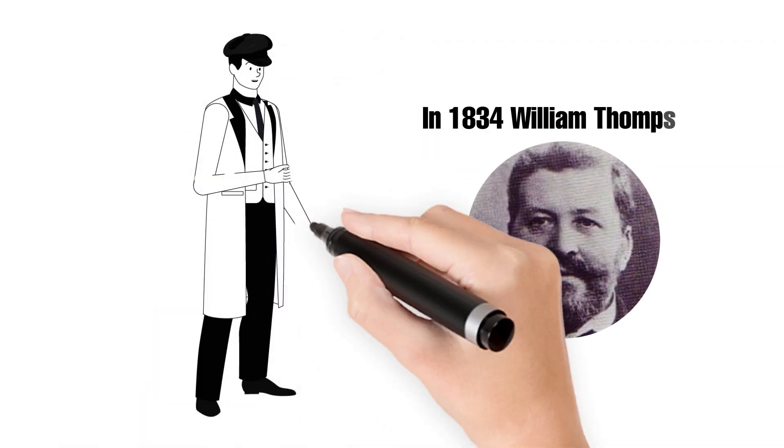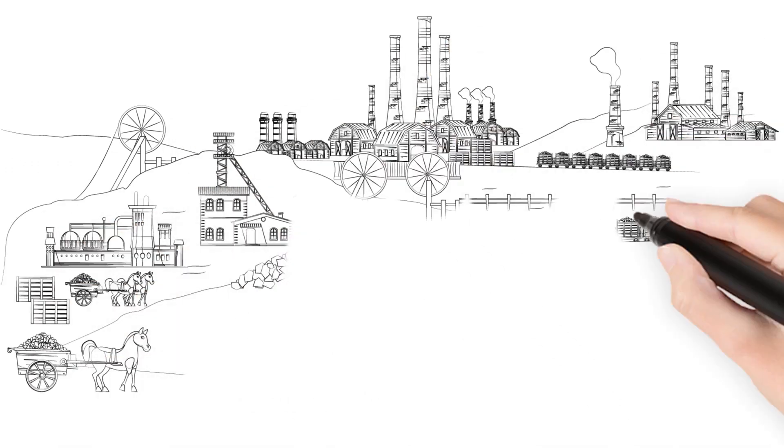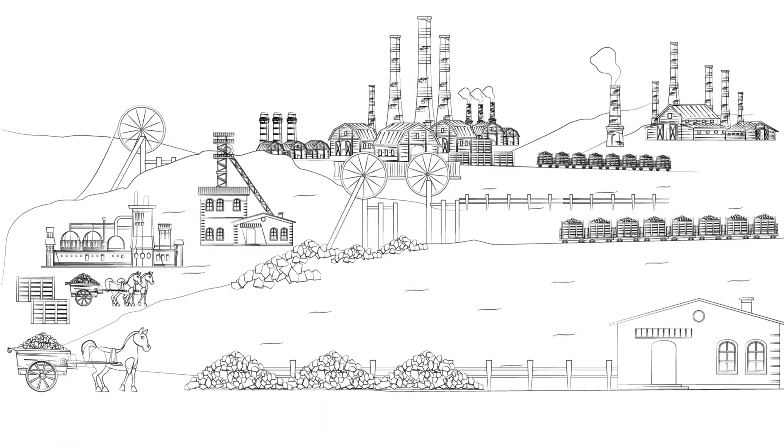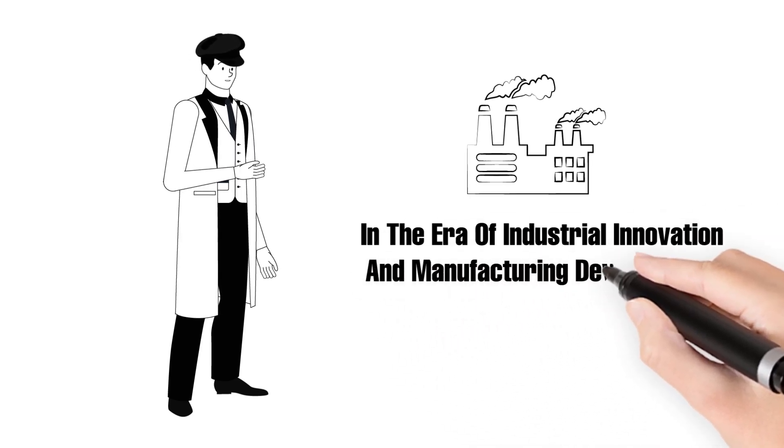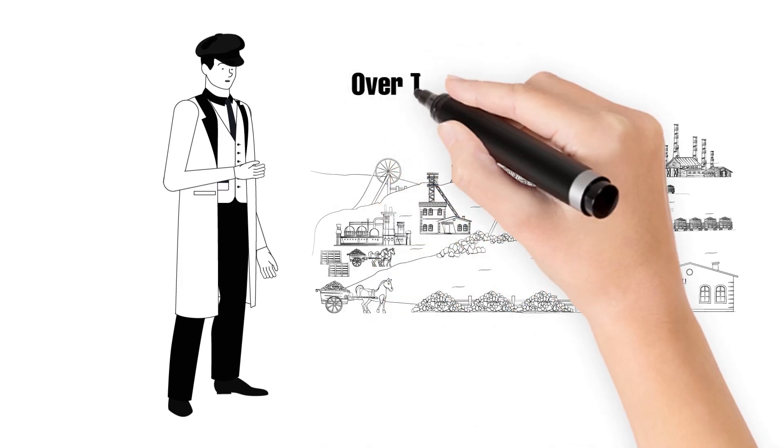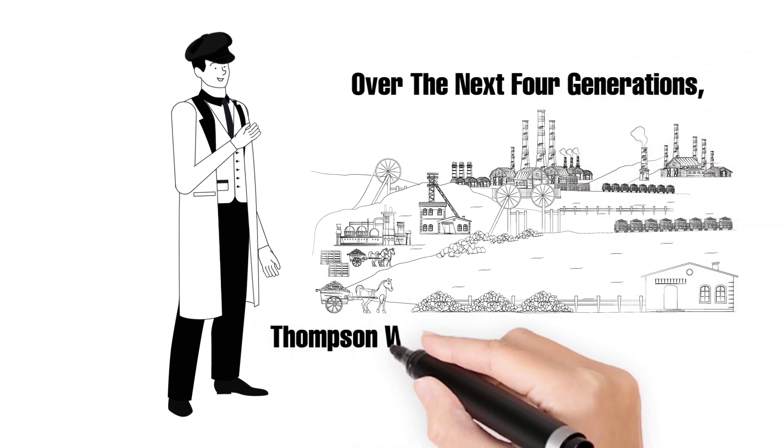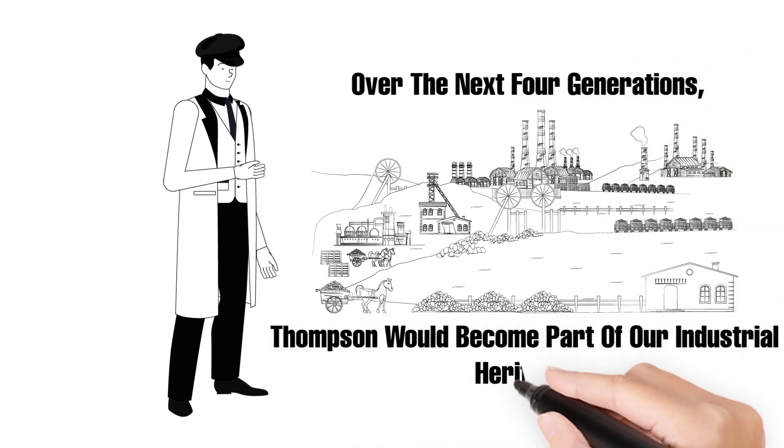In 1834, William Thomson established himself as a boilermaker in the Black Country in the era of industrial innovation and manufacturing development. Over the next four generations, Thomson would become part of our industrial heritage.